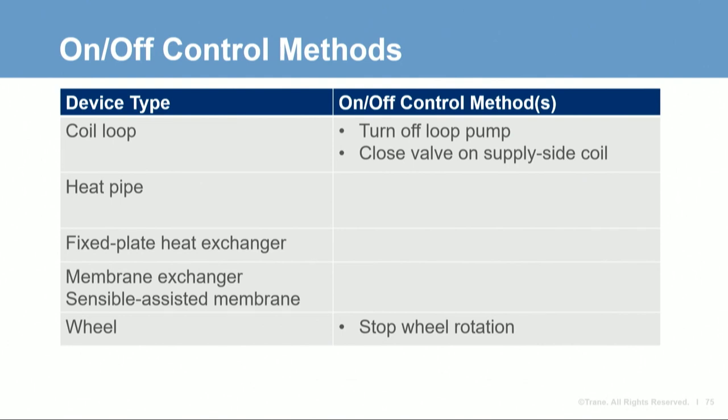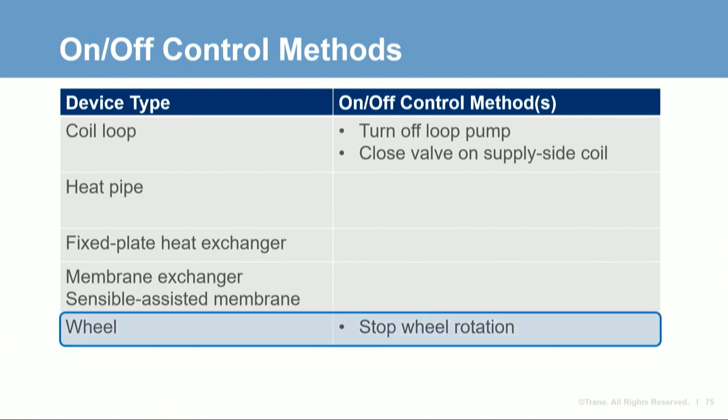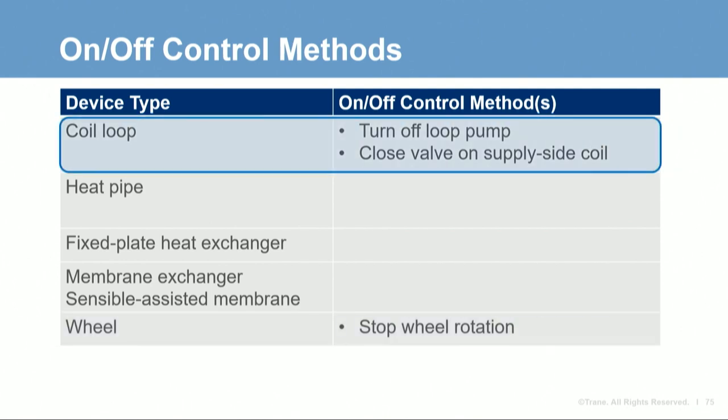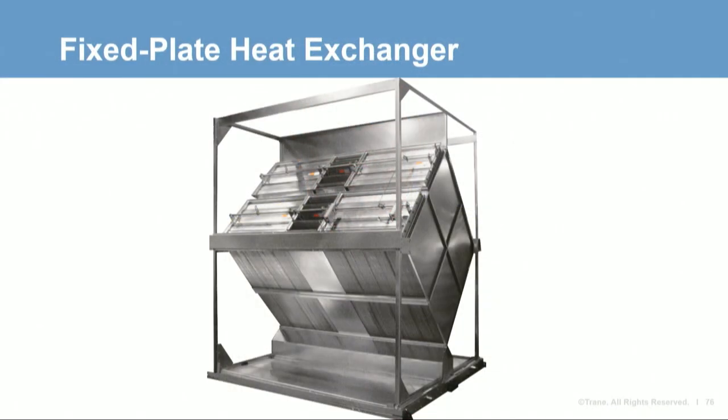The approach for turning off an energy recovery device differs among the various technologies. For a wheel, just turn off the motor to stop rotation. For a coil loop, turn off the circulating pump, or in the case of a networked coil loop, close the valve for that specific supply side coil. For a fixed plate or membrane heat exchanger, you need face and bypass dampers to prevent one of the two airstreams from passing through the device.